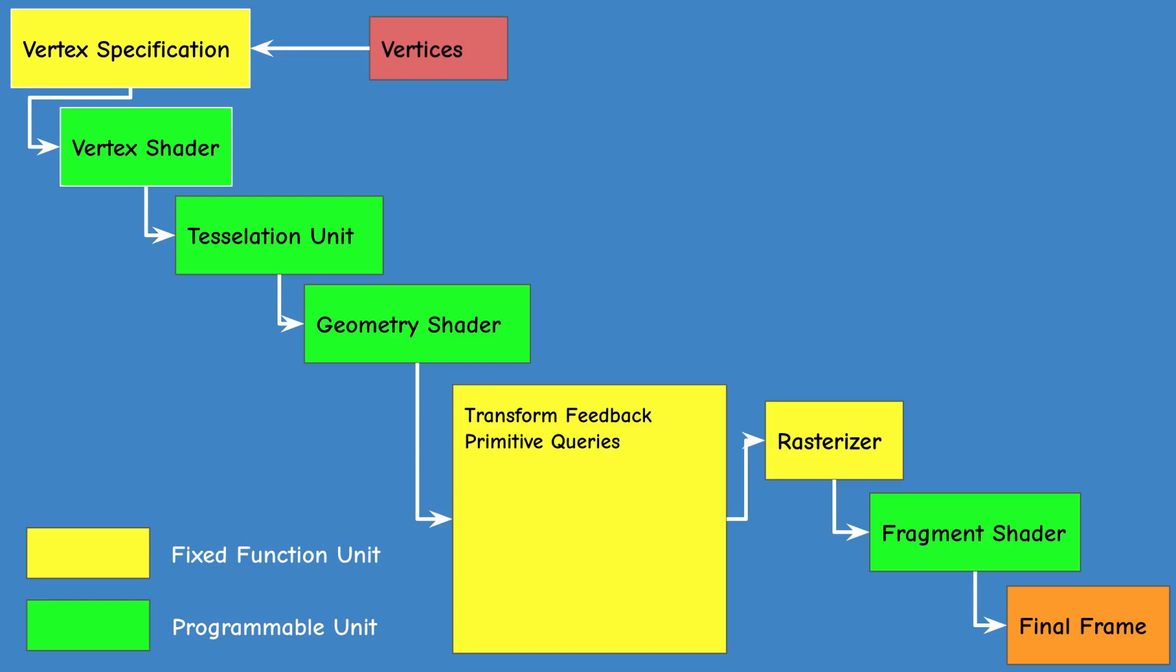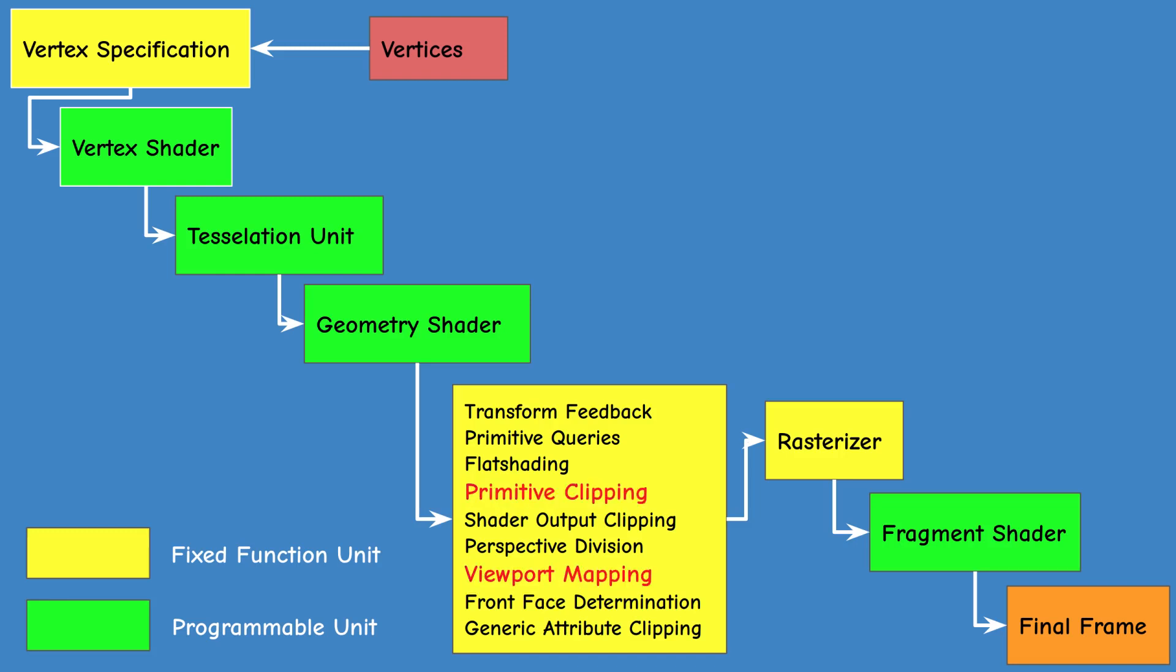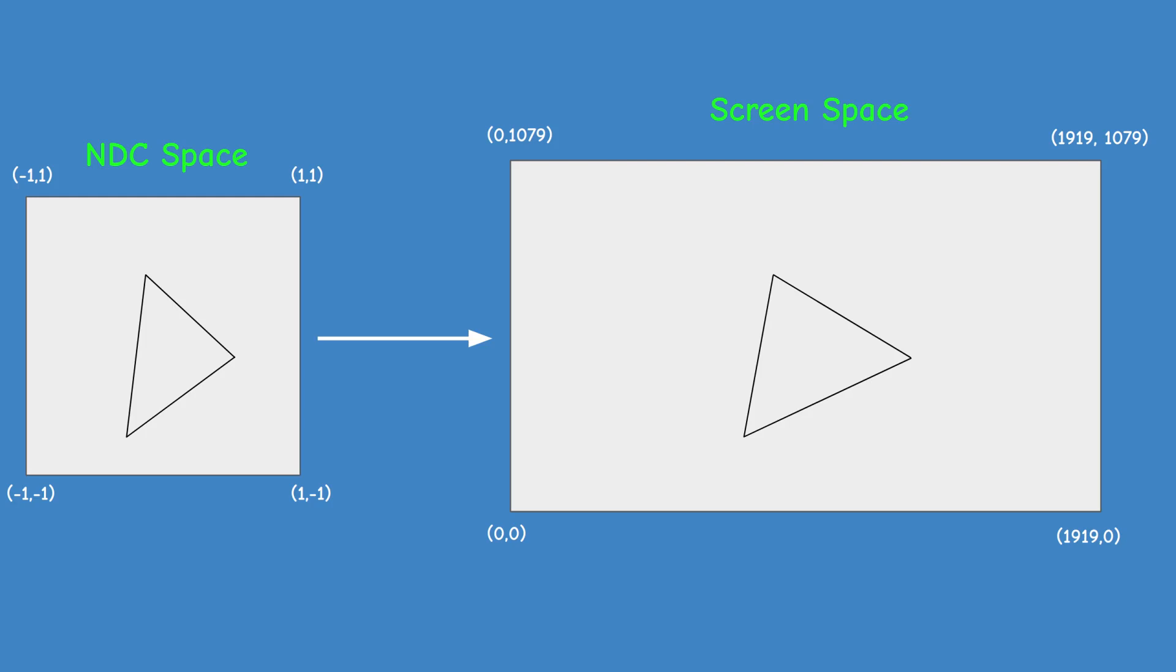Transform feedback, primitive queries, flat shading, primitive clipping, shader output clipping, perspective division, viewport mapping, front face determination, and generic attribute clipping. Since I want us to focus on the position coordinates, we're going to discuss mostly clipping and viewport mapping. The result will be screen space coordinates that can now be handed over to the rasterizer for rasterization.